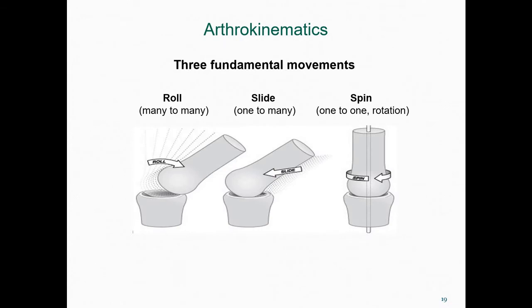Arthrokinematics refers to movement relating to the joints. In arthrokinematics, there are three functional motions: roll, slide, and spin. In roll, multiple points along the rolling articular surface make contact with multiple points on the articular surface being rolled upon. In slide, a single point on the sliding articular surface contacts multiple points on the opposing surface. And lastly, in spin, a single point on one articular surface rotates on a single point on another articular surface.